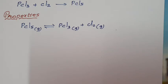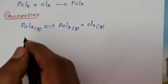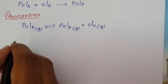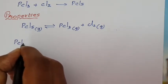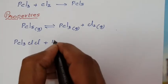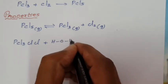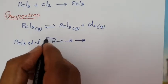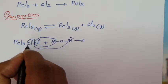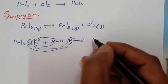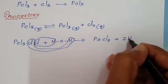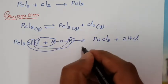PCl₅ in the equilibrium decomposition gives PCl₃ (phosphorus trichloride) and chlorine gas. The second reaction is hydrolysis of phosphorus pentachloride. When PCl₅ is treated with one molecule of water, the two hydrogen atoms remove one chlorine atom each, so two molecules of HCl are removed.